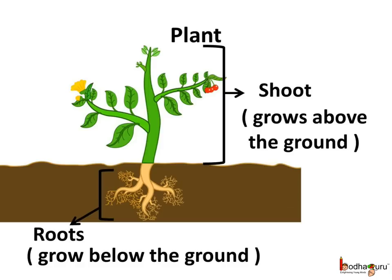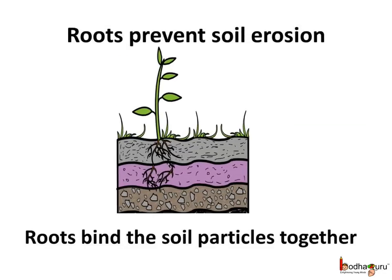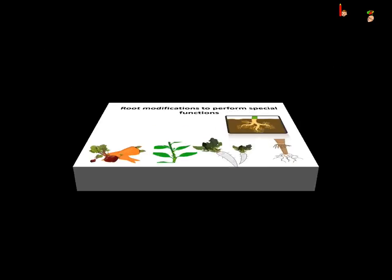So now let us see what is the importance of roots. We know that the roots absorb the water and the important minerals from the soil, and it also anchors the plant firmly in the ground. Apart from this, the important function that the roots perform is that the roots bind the soil particles together. Hence we can say the roots prevent soil erosion, that is the washing away of the soil particles due to wind, rain, etc.